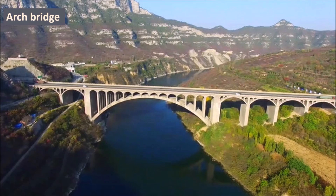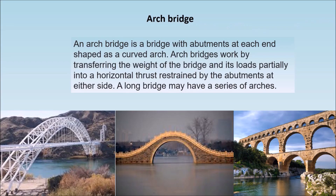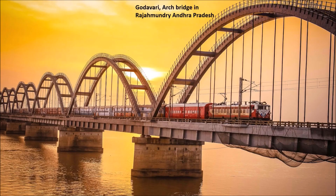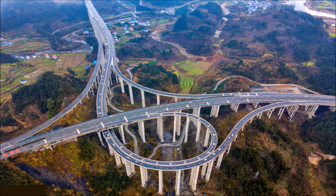Arch bridge — an arch bridge is a bridge with abutments at each end shaped as a curved arch. Arch bridges work by transferring the weight of the bridge and its load partially onto a horizontal thrust retained by the abutments at either side. A long arch bridge may have a series of such arches. The Godavari Arch Bridge in Rajamundari, Andhra Pradesh is an example of an arch bridge. Flyovers are bridges built over roads to ease the movement of traffic.